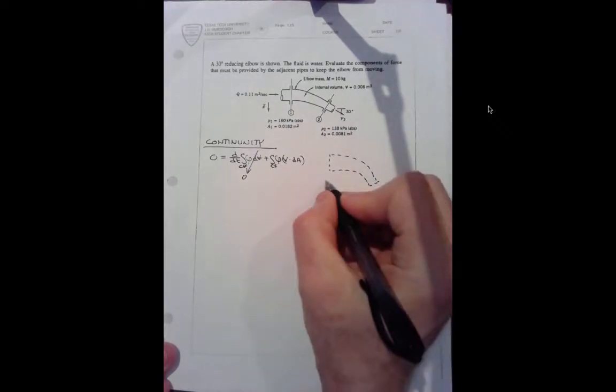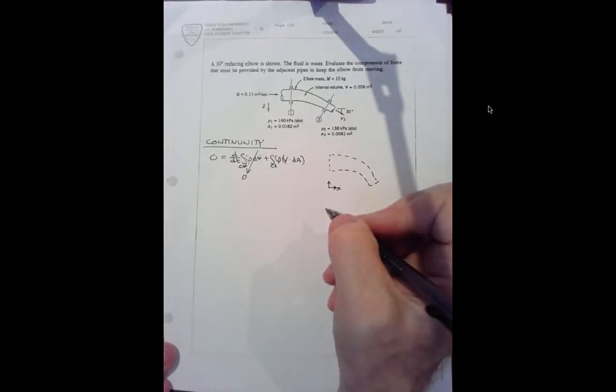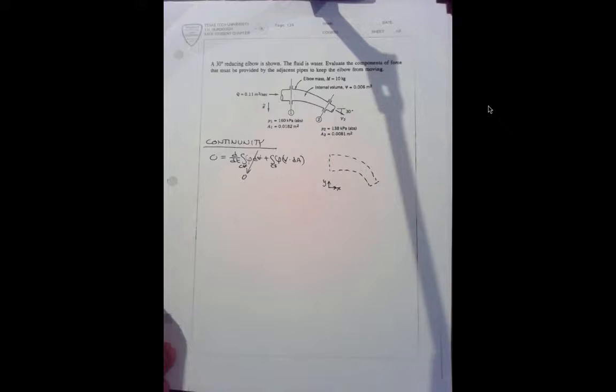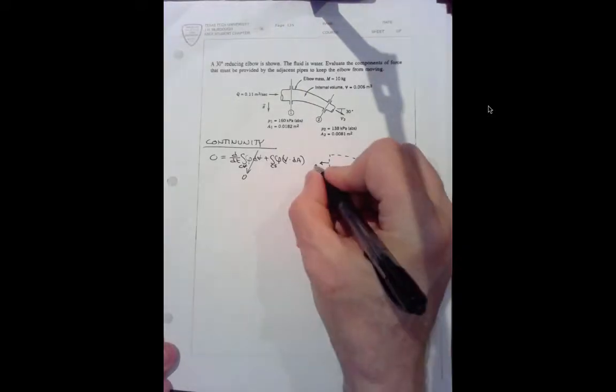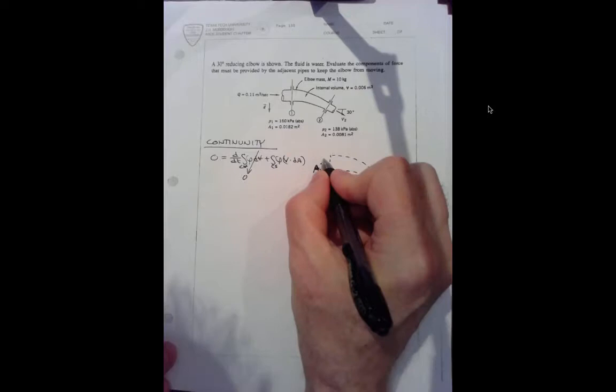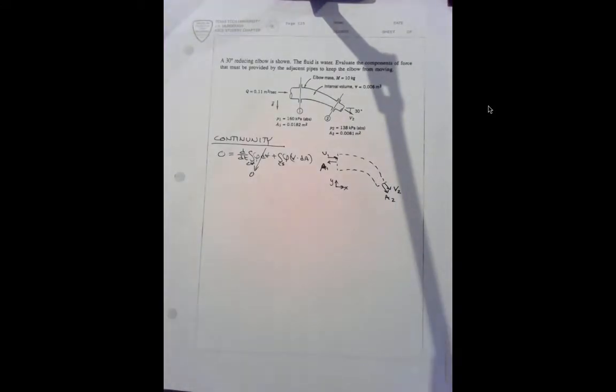We might as well introduce our coordinate system. There's the x-axis. Here's the y-axis. Let's just call that a1 pointing out. A2. U1 coming in. Velocity 2 going out. We'll resolve those into components shortly.